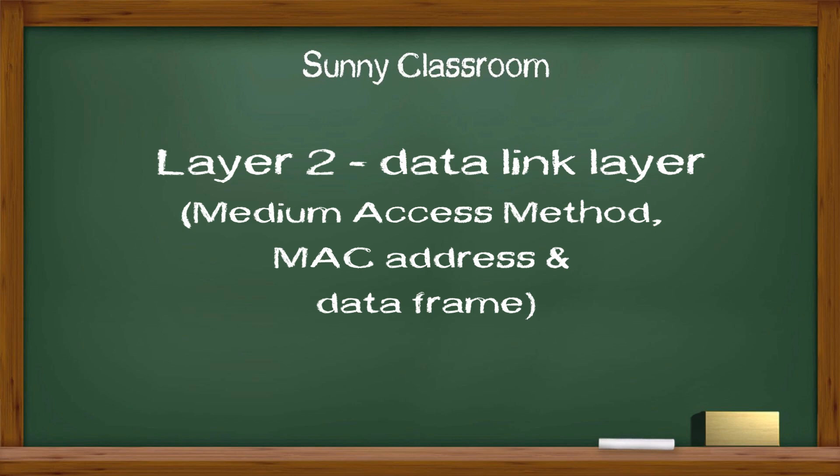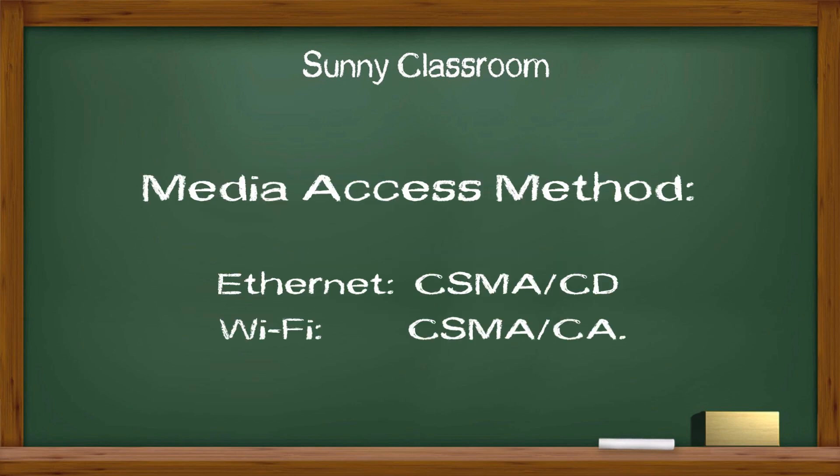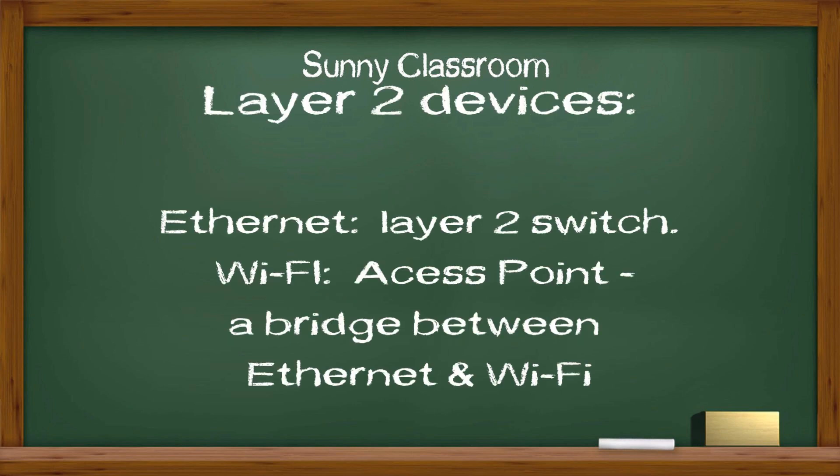Layer 2, Data Link layer: for media access method, Ethernet uses CSMA/CD, while Wi-Fi uses CSMA/CA. Ethernet uses the Layer 2 device, a switch. In a wireless network, an access point is a Layer 2 bridge that connects Ethernet with Wi-Fi.